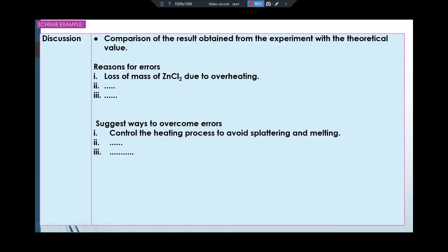Next item is discussion. In discussion, always compare your result obtained from the experiment with the theoretical value. So for this experiment, the theoretical empirical formula for zinc chloride is ZnCl2. So just compare your result with the theory, whether you get the same or different formula.